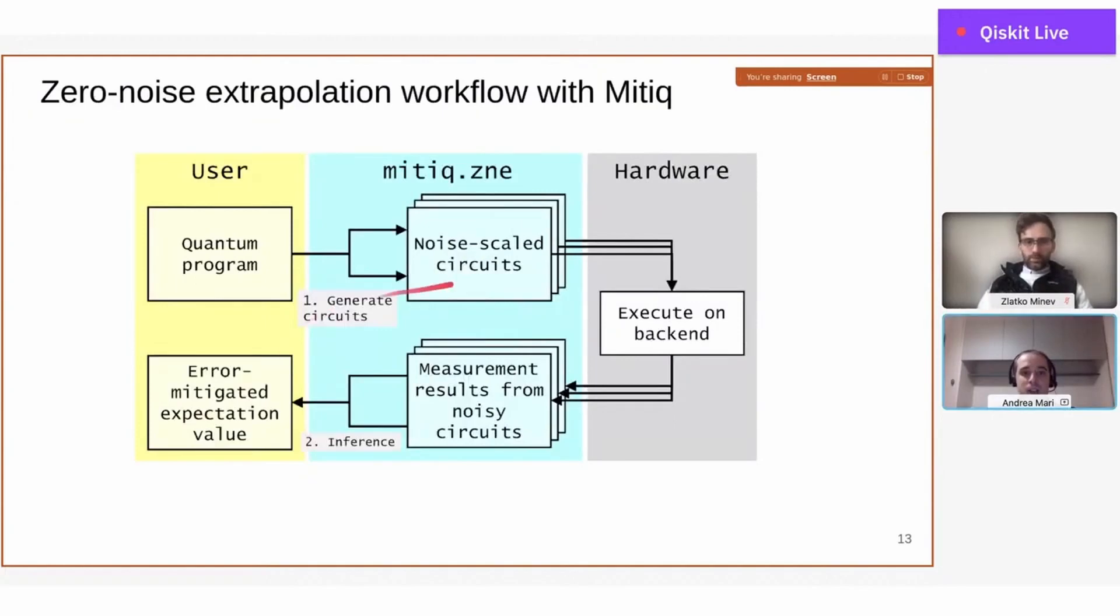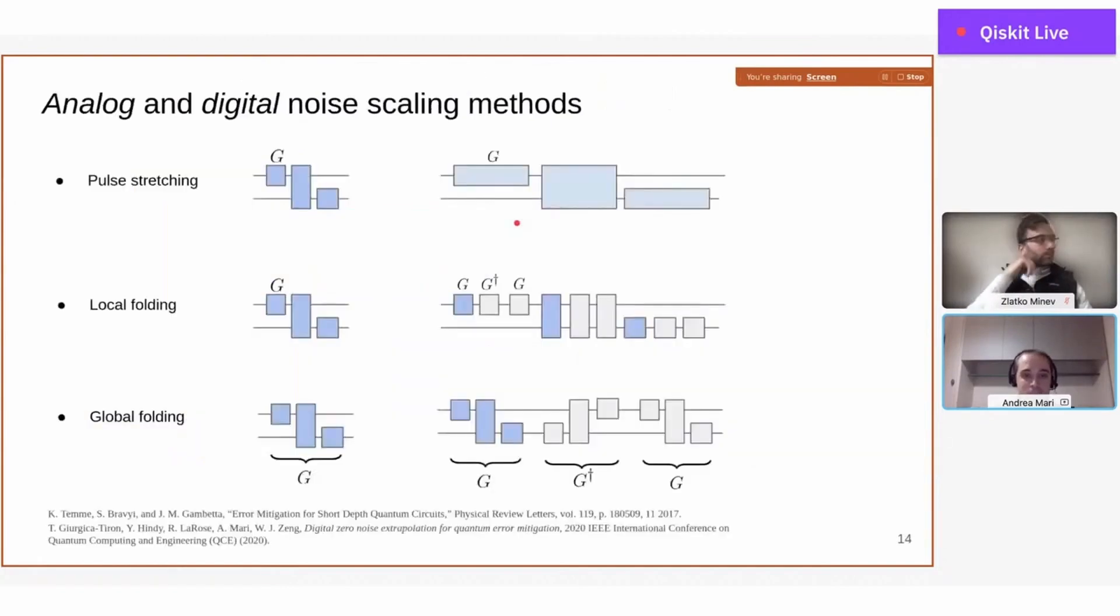How can we generate noise-scaled circuits? One of the first ways in which noise was proposed to be scaled was in a paper by Temme, Bravi, and Gambetta, IBM researchers. They proposed a very nice trick: you take a circuit and just apply the same circuit but stretched along a larger amount of time. You take the physical pulses that you send to the qubit and stretch them in time.